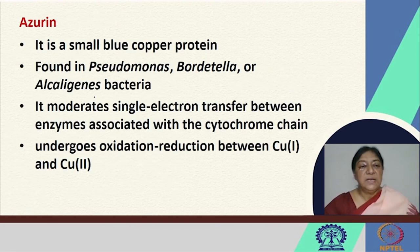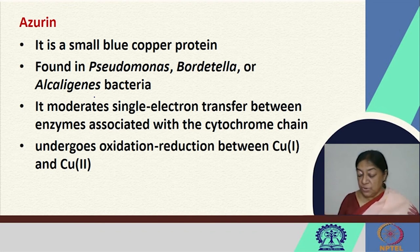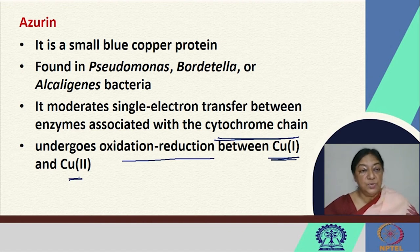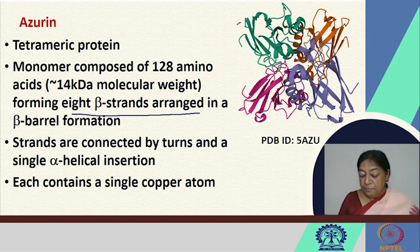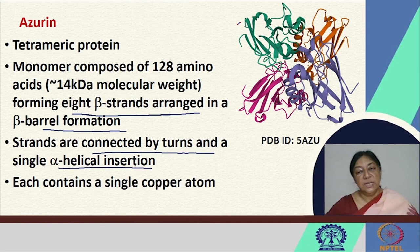Azurin is another small blue copper protein found in Pseudomonas, Bordetella, and Alcaligenes bacteria. It moderates single electron transfer between enzymes associated with the cytochrome chain, undergoing oxygen reduction between the +1 and +2 copper states. It is a tetrameric protein with a monomer composed of 128 amino acids, and forms a beta barrel from eight beta strands connected by turns and a single alpha-helical insertion, with each monomer containing a single copper atom.